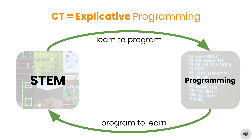Early on, Seymour Papert used the notion of computational thinking to talk about the use of programming to facilitate what he called explicative learning processes in the context of mathematics. He talked about a bi-directional learning process combining 'learn to program' with 'program to learn.' When analyzing the solutions to the hourglass challenge, we categorized the projects submitted into five clusters — E1 to E5 — according to their degree of explicativeness. A low degree of explicativeness, resulting from projects that just drew a static picture or an animation, may still fulfill the 'learn to program' goal of CT but are not likely to contribute much towards the 'program to learn' aspect. Simulations, in contrast, try to model causality with potentially surprising results.